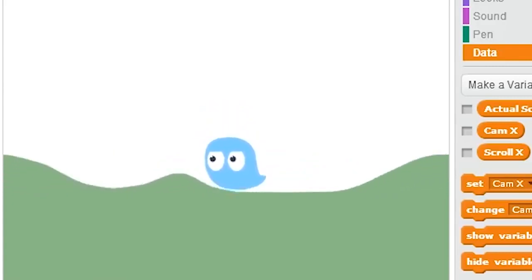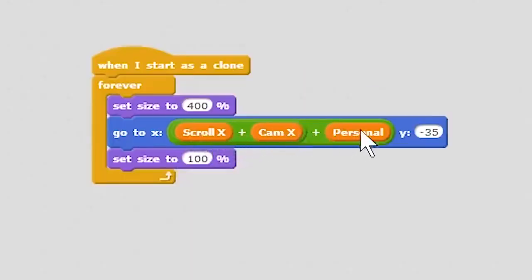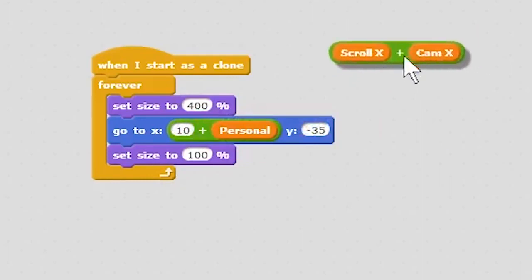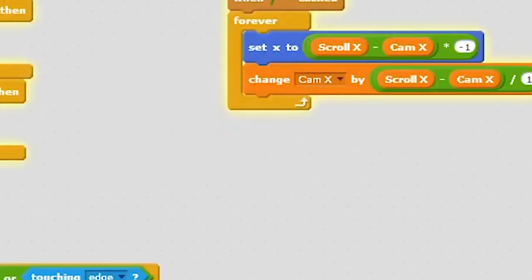For your sprites moving, you're going to go to scroll x plus cam x. Just ignore this personal variable, this is what you have to do. And of course you can do this with the y. Same thing, but just do everything I did for the x but for the y.